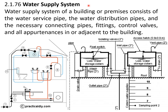The water supply system of a building or any premises consists of the water service pipe, the water distribution pipes and the necessary connecting pipes, fittings, control valves and all apparatuses in or adjacent to the building which are required in order to make the system work.